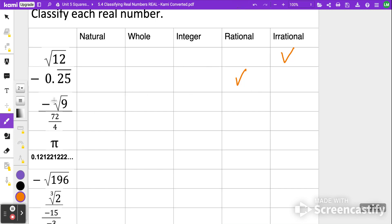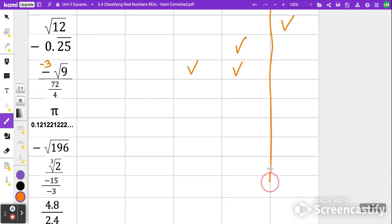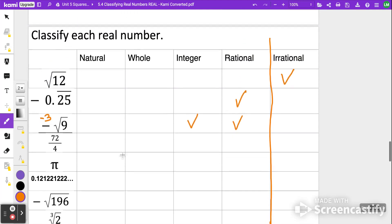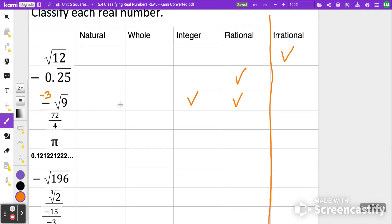The next one we have is the negative square root of 9, and if you solve that, that's going to be equal to negative 3. It is not a natural number, not a whole number, but it is an integer, and because it's an integer, it is also going to be considered a rational number. I'm going to draw a line down here to separate rational and irrational, because not everything will be in that section. So negative 3 is considered an integer, but it's also considered rational because we can take negative 3 and write it over 1, and there it is written as a fraction.